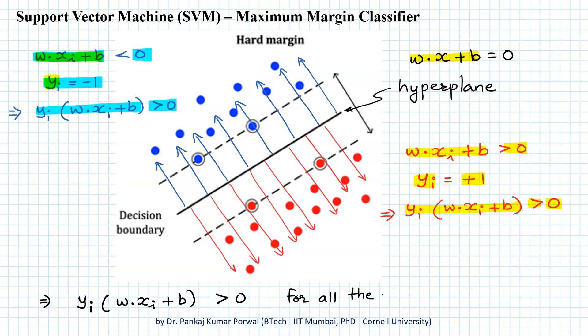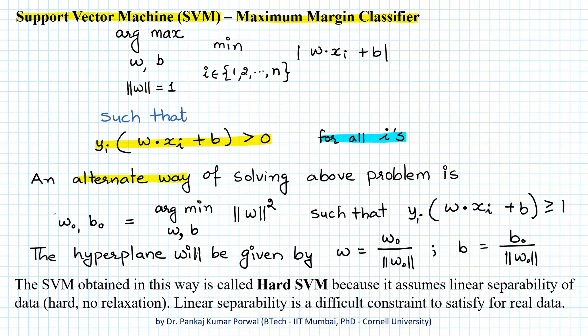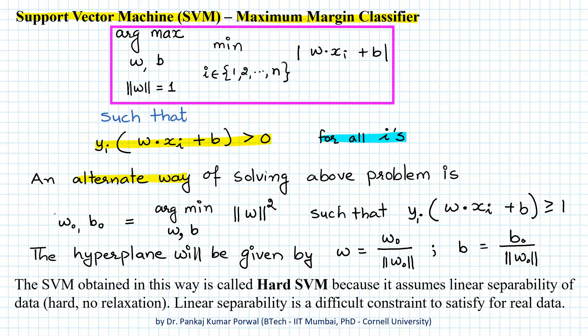If any data point is lying on the wrong side of the hyperplane, then w dot xi plus b and yi will be of opposite sign, and their product will be less than zero — that will violate our constraint. That is how this constraint equation becomes a linear separability constraint for our dataset.